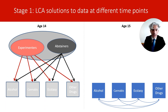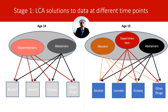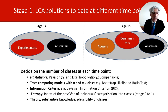Spotlight on age 15 now. I assume that at this stage there is more variability in the behavioral patterns we observe. Therefore, we might identify an additional class of substance users — that of abusers.